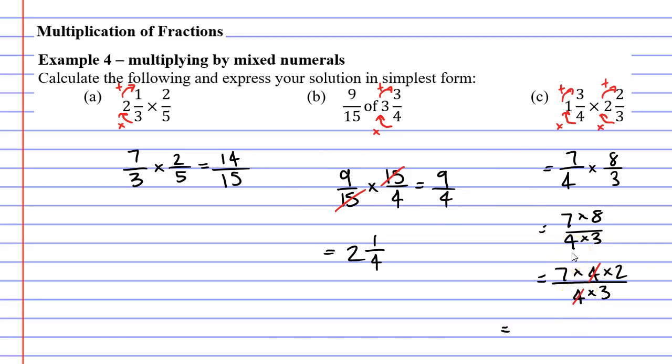At the top of our fraction we have 7 times 2 which makes 14 and at the bottom of our fraction we have the number 3. We can convert this to a mixed numeral 3 fits into 14 4 times with a remainder of 2 and our denominator stays the same. It stays as 3.